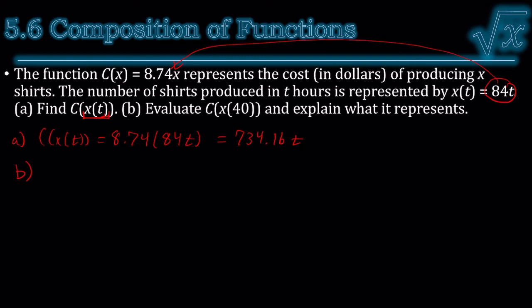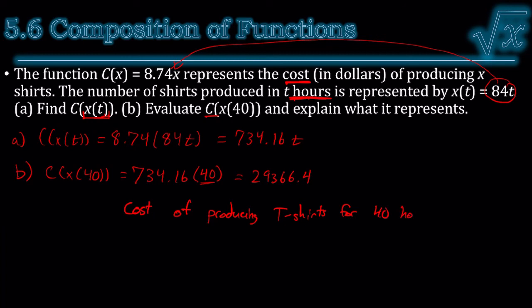Part b says evaluate c(x(40)). Well, that was 734.16 times t. But t is 40. So when I do that, I get 29,366.4. But what does that represent? Well, t is the number of hours and c was the cost. So that is the cost of producing t-shirts for 40 hours. It would be $29,366.40.